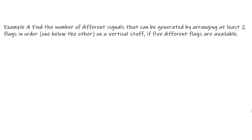Example 4: Find the number of different signals that can be generated by arranging at least two flags in order, one below the other, on a vertical staff, if five different flags are available. The important thing to keep in mind is 'at least two flags' — that is, the minimum number of flags is two. We can use two flags, three flags, four flags, or five flags.